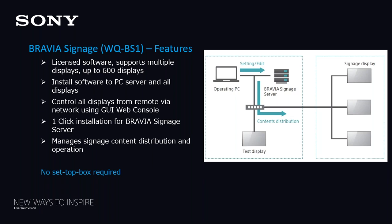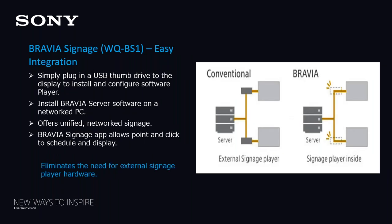You can control all the displays from one GUI. The one-click installation for the Bravia Signage server installs several components onto the PC: MongoDB (a database), Apache server (a web server), and the Bravia Signage server application itself — all installed together by starting a batch file. The key point, like the other solutions, is that there's no external set-top box signage player required. The software runs directly on the display and offers a network signage solution.